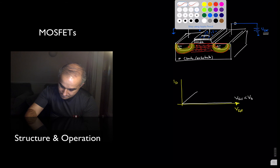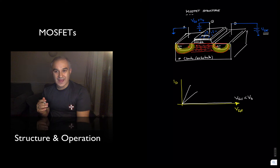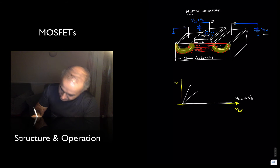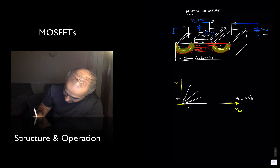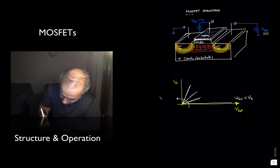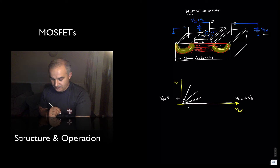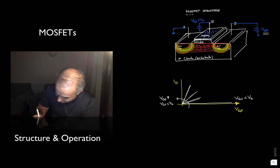As you increase the voltage gate-to-source, you increase the current, meaning the conductance increases or the resistance goes down. We could think of it as a conductor whose conductance is voltage-controlled by the voltage gate-to-source. So as voltage gate-to-source increases, you get more current. And for voltage gate-to-source less than the threshold voltage, you get no current — you are in cutoff.